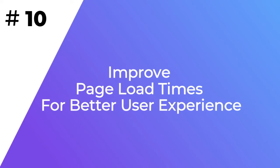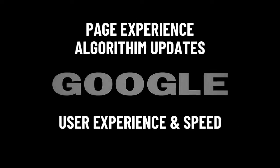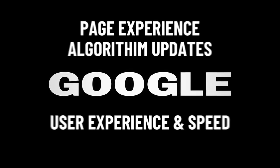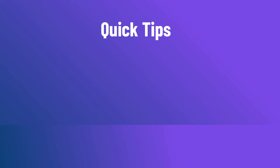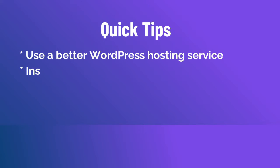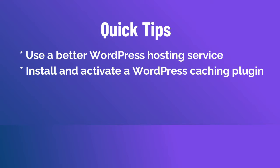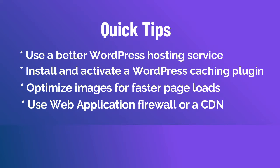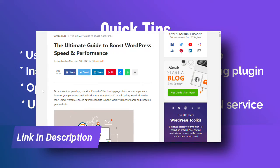Google's page experience algorithm updates focus on user experience and website speed. Speed is already an important factor in SEO, and faster page loads affect your search rankings. Here are some quick tips you can apply right away: use a better WordPress hosting service, install and activate a WordPress caching plugin, optimize images for faster page loads, and use a web application firewall or a CDN service. Be sure to check out our guide on optimizing your website's performance.